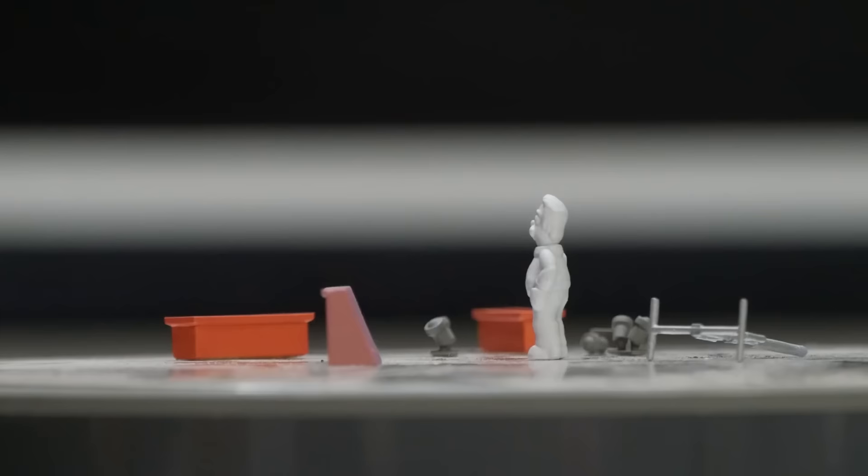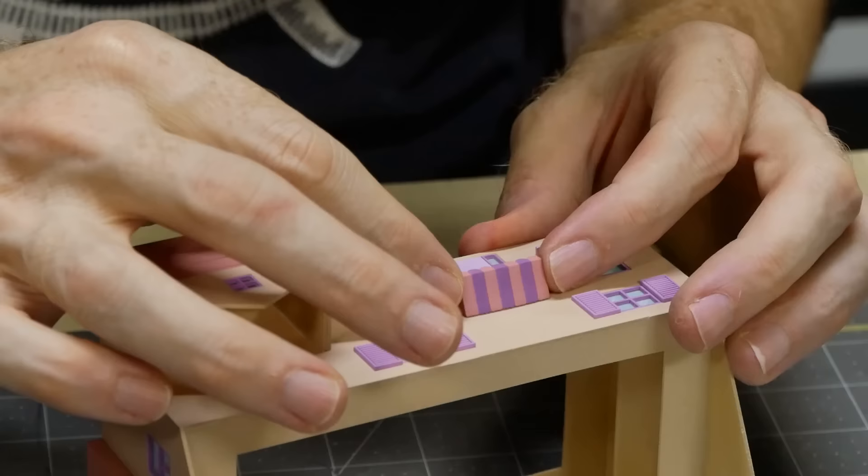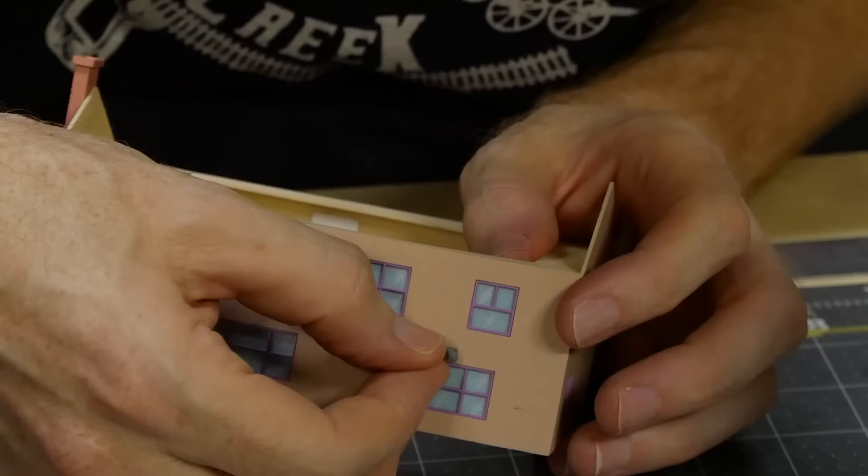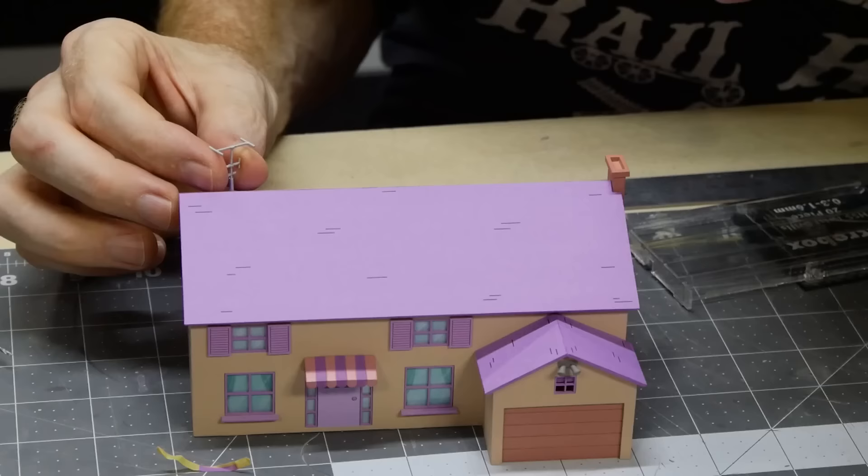There are some additional 3D printed details that will be added. The doorway awning is one such detail, as well as the security lights and also the aerial on the roof.